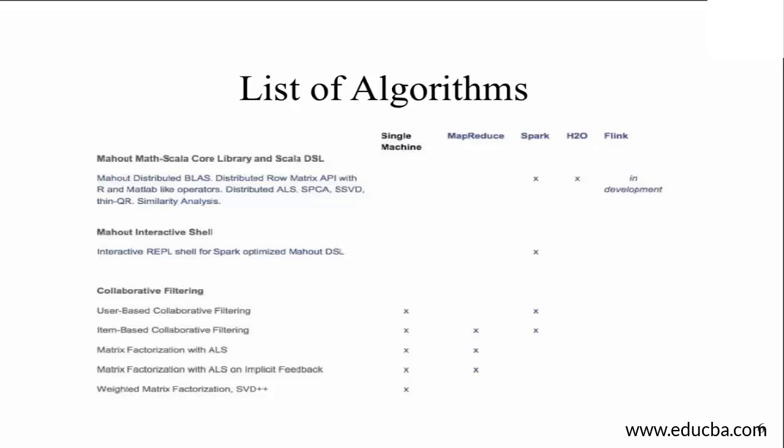There is collaborative filtering, user-based collaborative filtering, item-based collaborative filtering, matrix factorization with ALS, matrix factorization with ALS on implicit feedback, and weighted matrix factorization SVD++. Now all of these models and terminologies may seem new to you, but these will become more and more relevant and important as we go on, and each of these techniques and filtering mechanisms and algorithms shall be discussed in detail and how Mahout can be deployed to use these techniques.